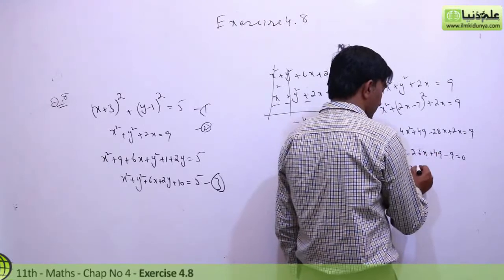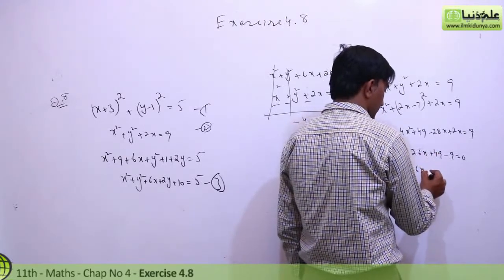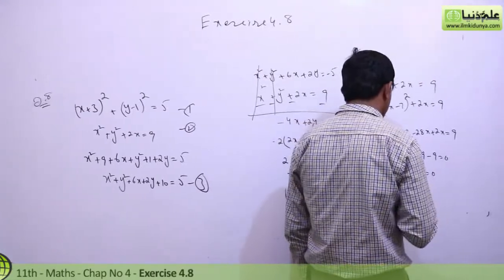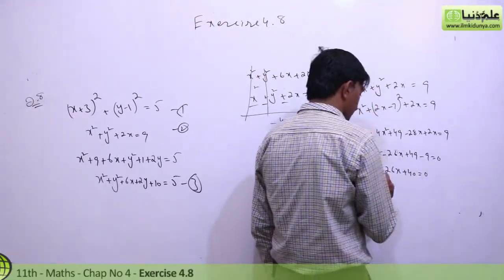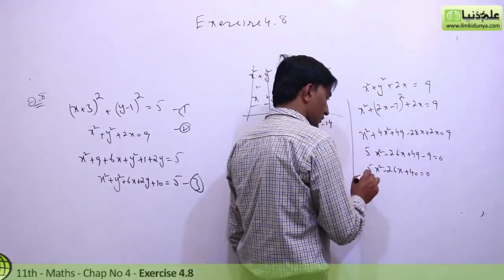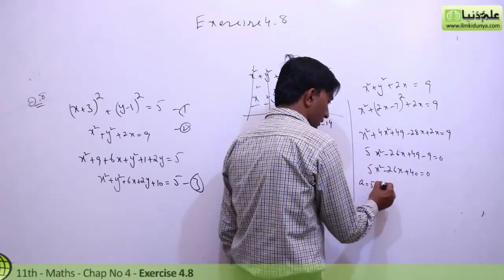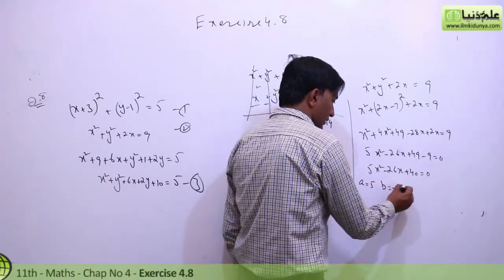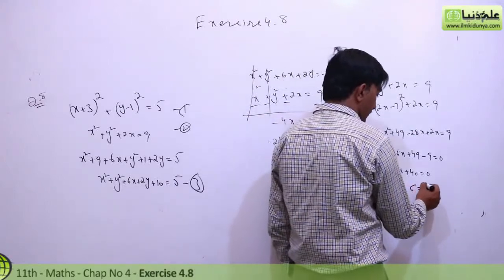Then 5x square minus 26x plus 49 minus 9 equal to zero, giving 5x square minus 26x plus 40 equal to zero. Here a equal to 5, b equal to minus 26, and c equal to 40.